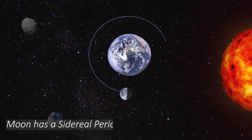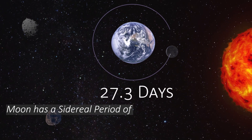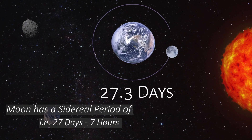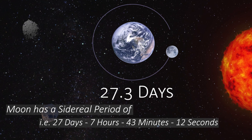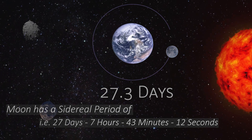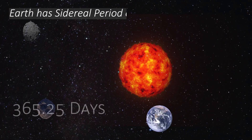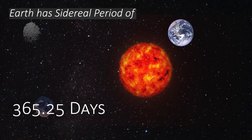The moon has a sidereal period of 27.3 days, that is 27 days, 7 hours, 43 minutes and 12 seconds. Earth has a sidereal period of 365.25 days.